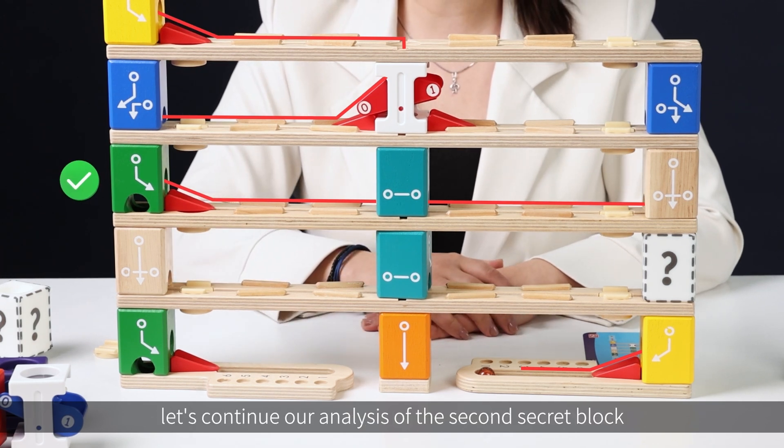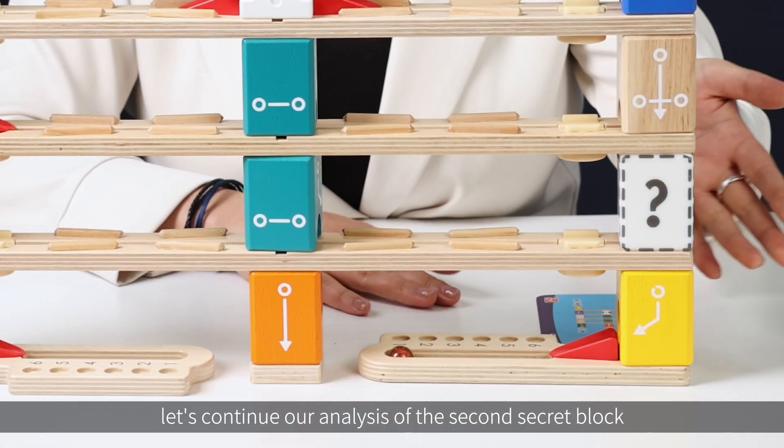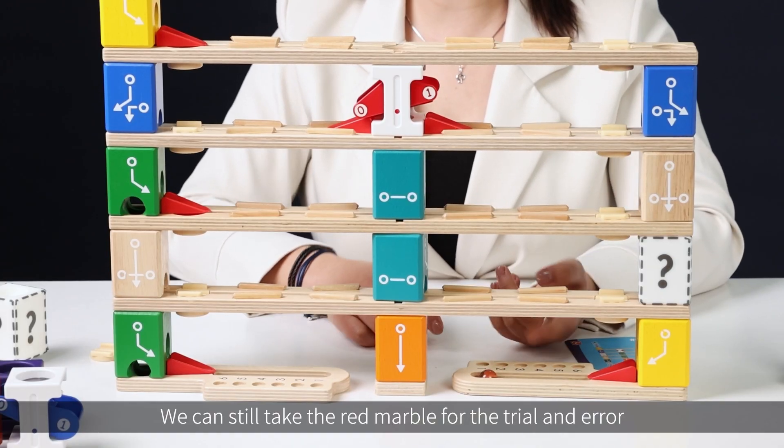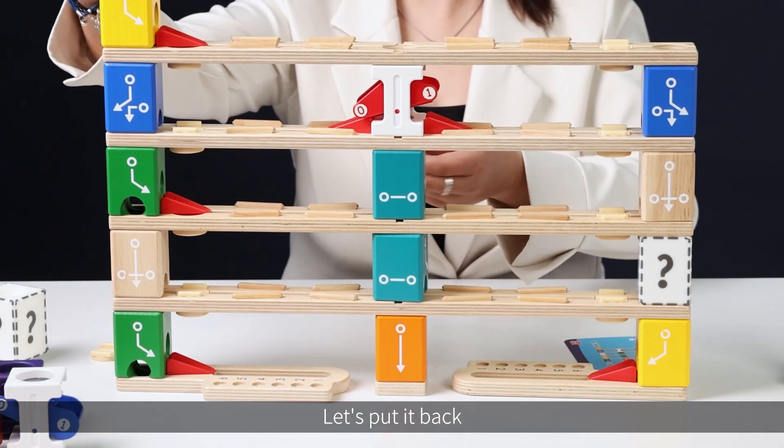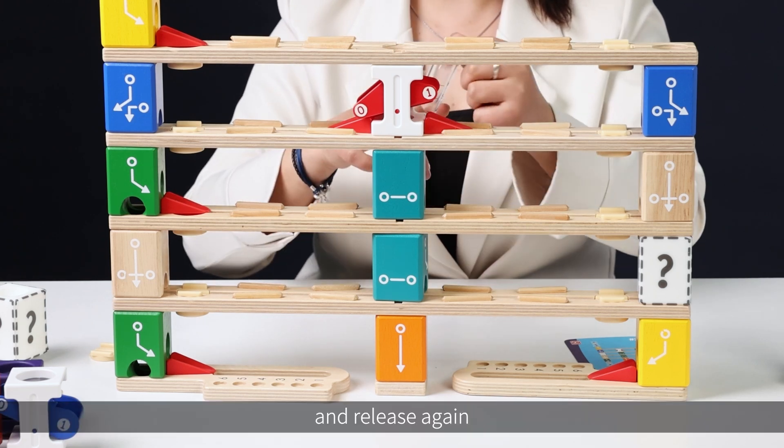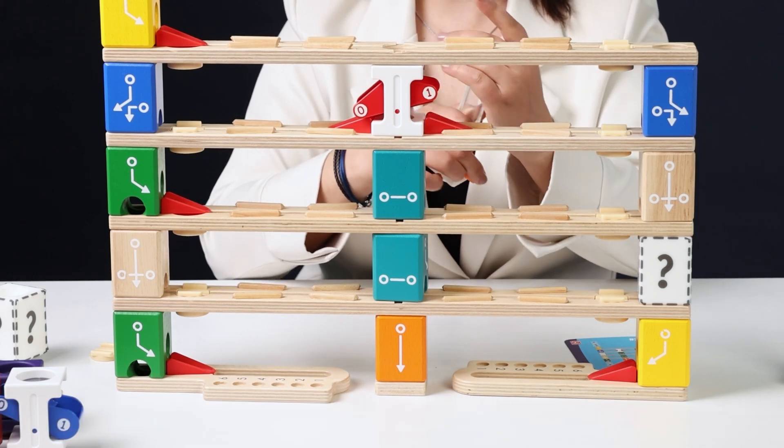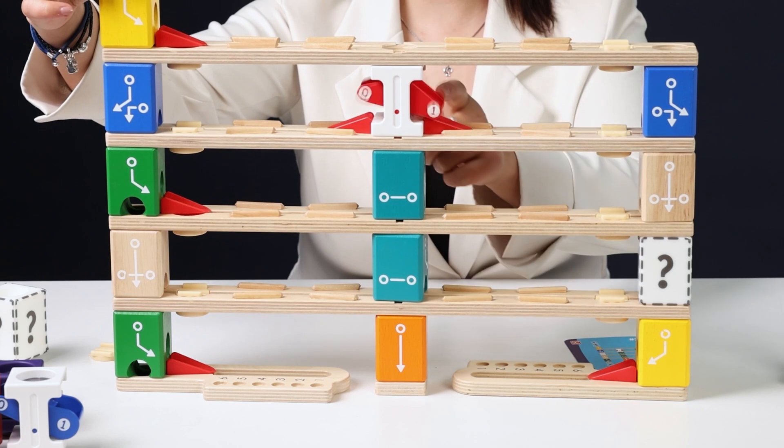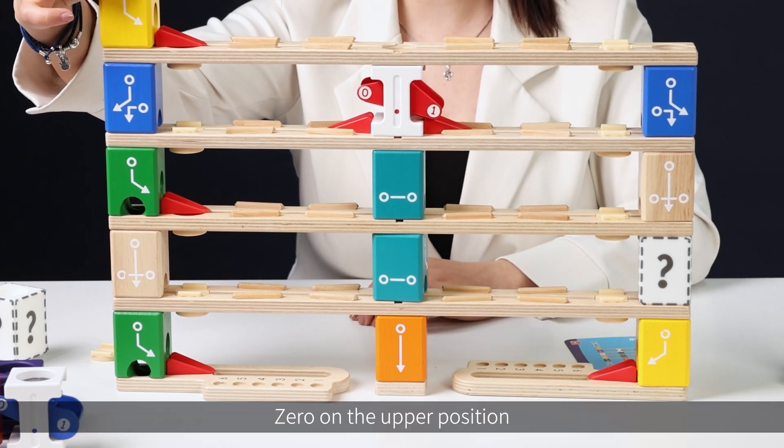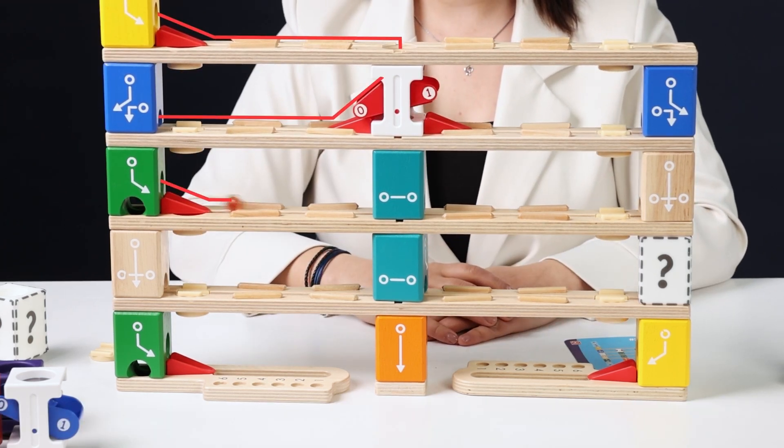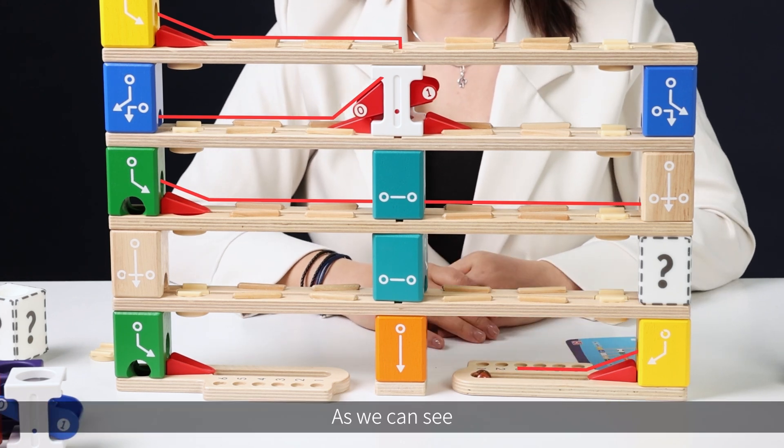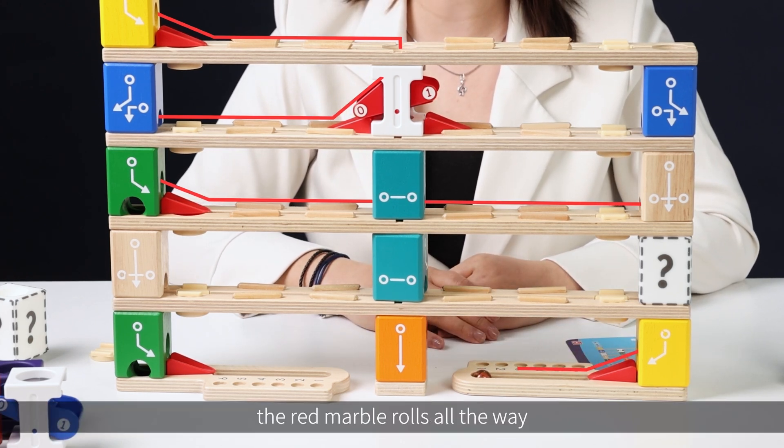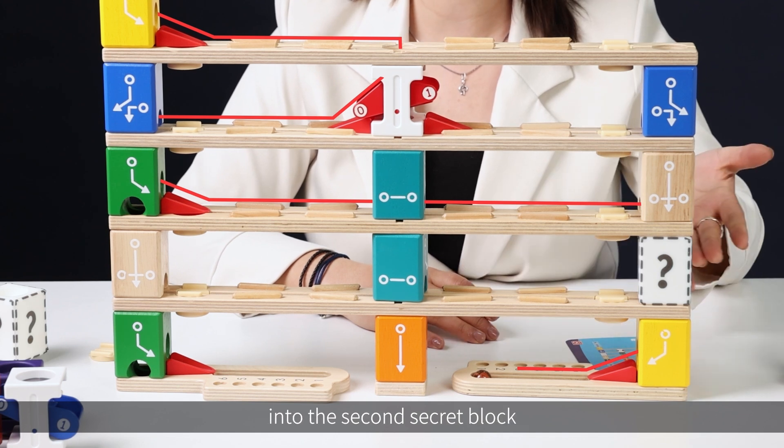Now, let's continue our analysis of the second secret block. We can still take the red marble for the trial and error. Let's put it back and release again. Zero on the upper position. As we can see, the red marble rolls all the way into the second secret block.